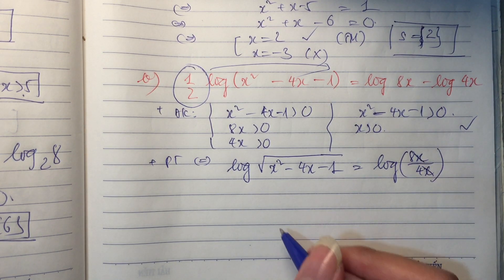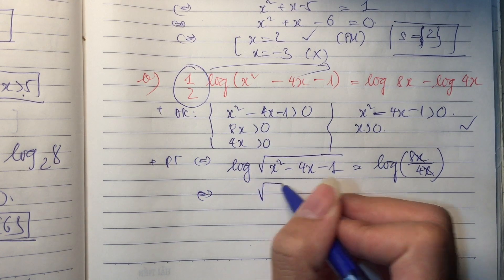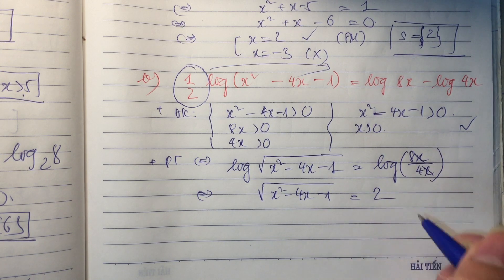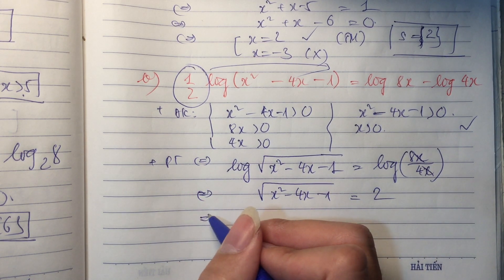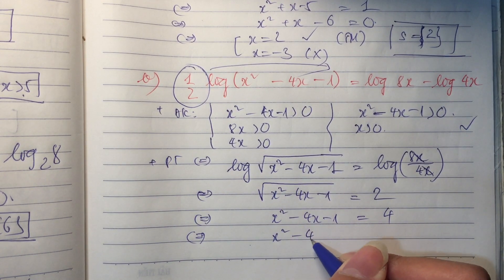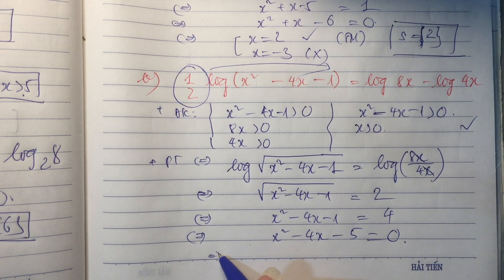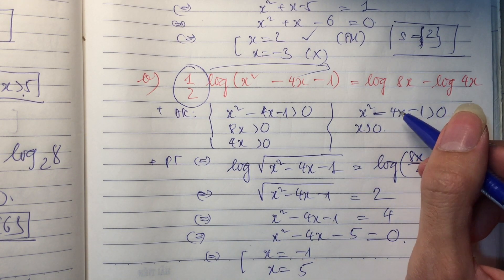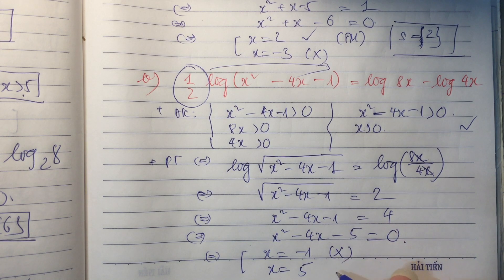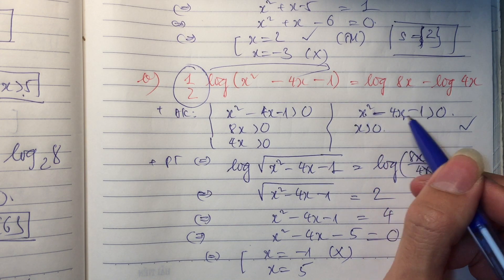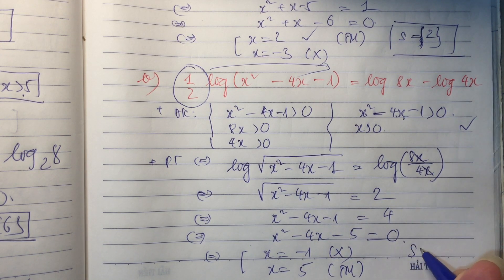2 cái này rút gọn x mất rồi. Như vậy 2 bên bỏ logarit đều, chúng ta sẽ còn căn bậc 2 của (x bình phương trừ 4x trừ 1) bằng 2. Bình phương 2 vế lên: x bình phương trừ 4x trừ 1 bằng 4. Chuyển vế: x bình phương trừ 4x trừ 5 bằng 0. Nhầm: A trừ B cộng C. Một nghiệm là âm 1, cái kia là 5. Hai cái này phải thỏa mãn điều kiện x lớn hơn 0, nên chúng ta chọn 5. 5 bình là 25, trừ 20 là 5, trừ 1 là 4, dương thật, thỏa mãn. Bài này chỉ có duy nhất một nghiệm là 5.